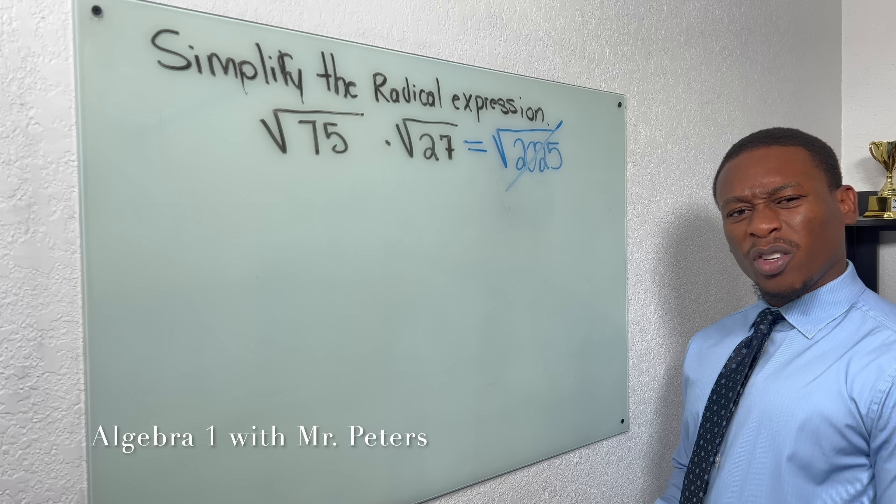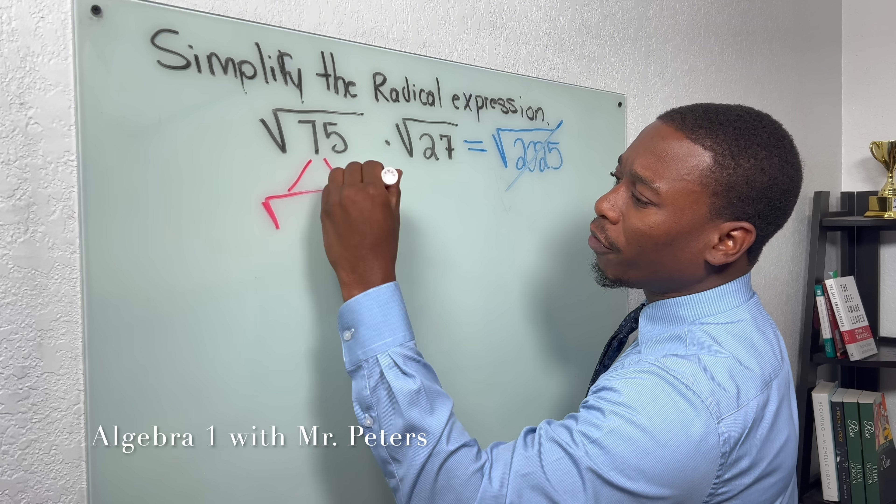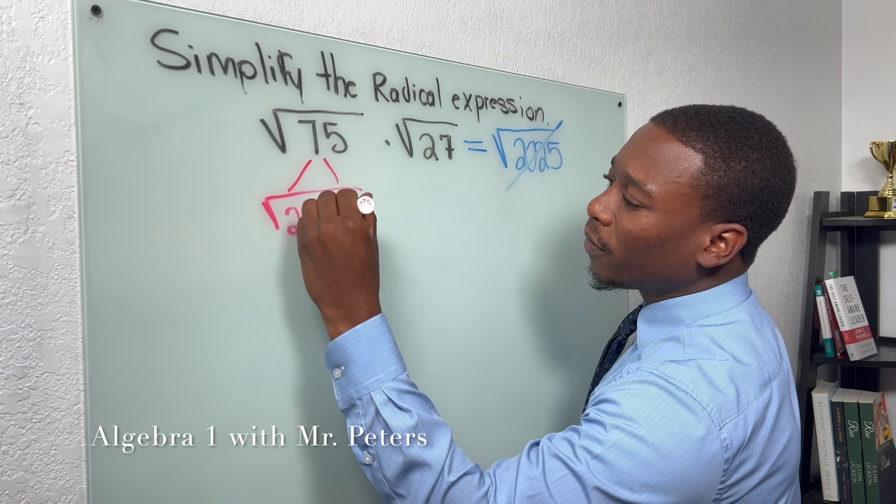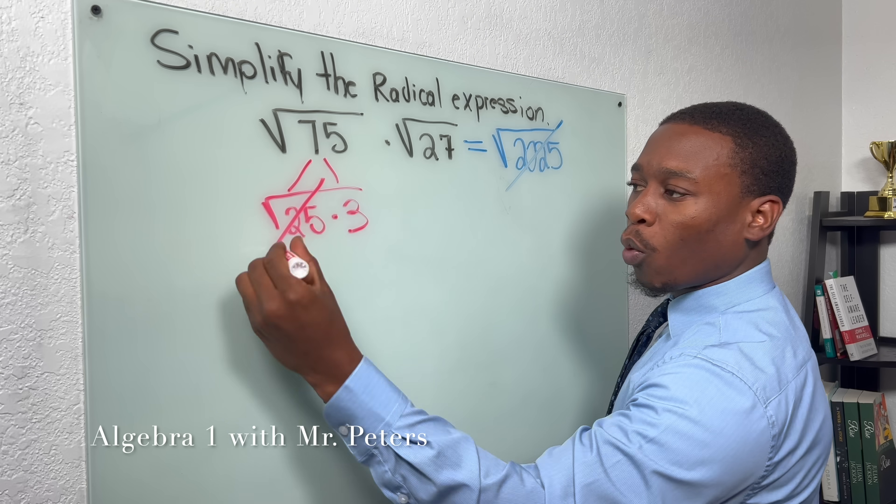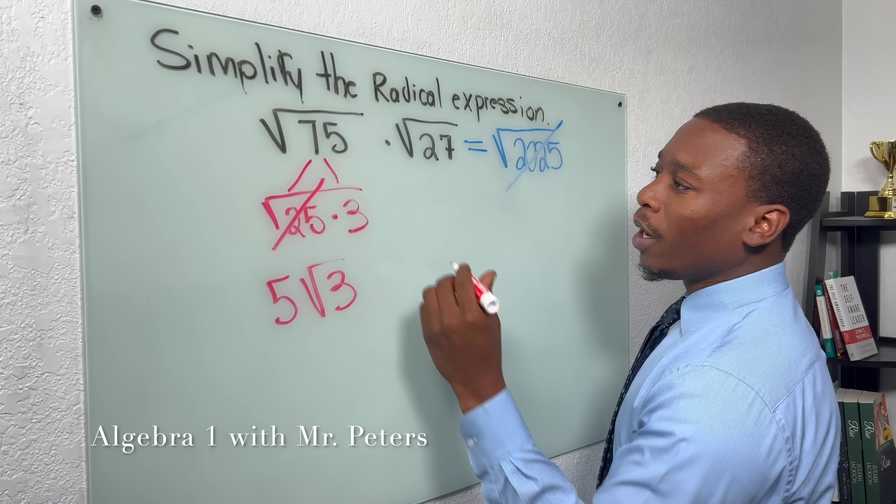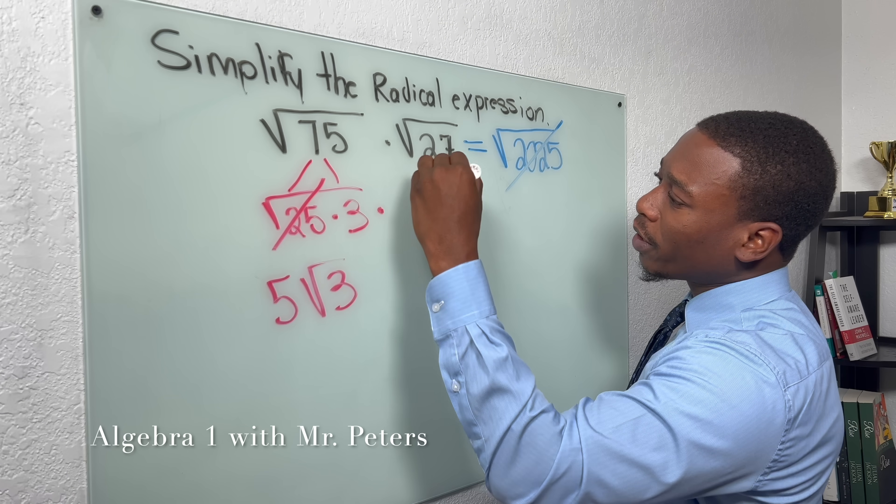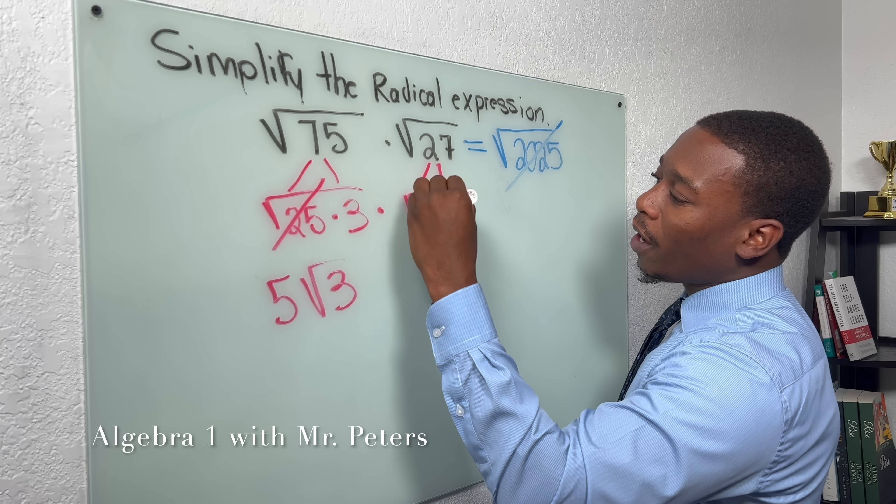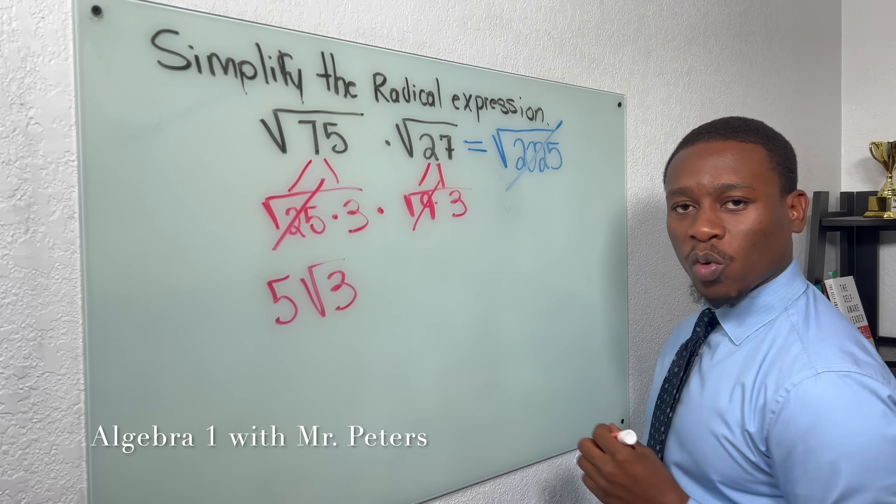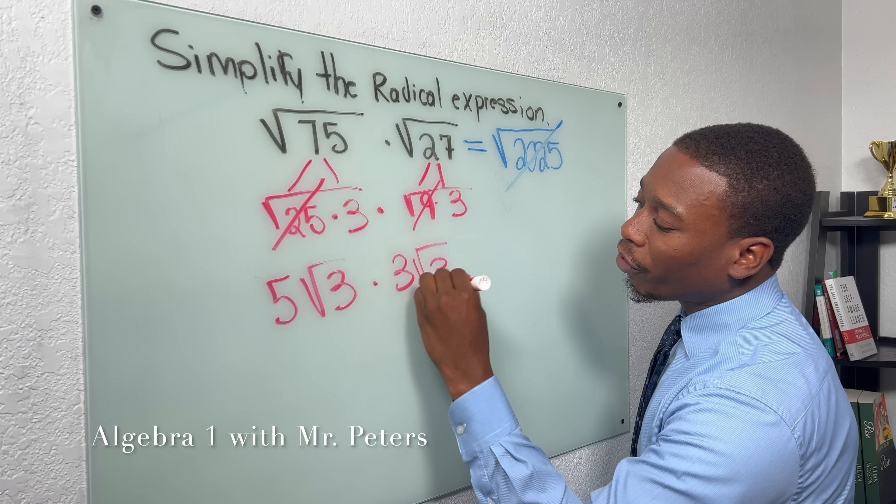So what we can do, let's try to break these down, right? So we're going to have radical 25 times 3. Square root comes out. We have 5 radical 3. And then once we go to our second radical, we are going to have 9 times 3. Perfect square 9 comes out. Now we're left with 3 radical 3.